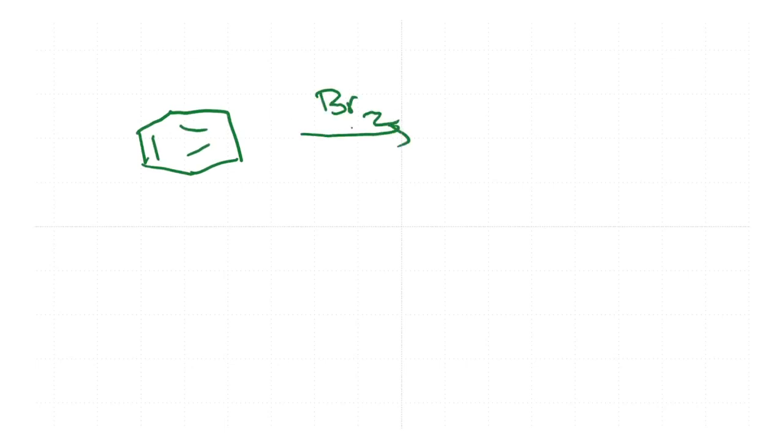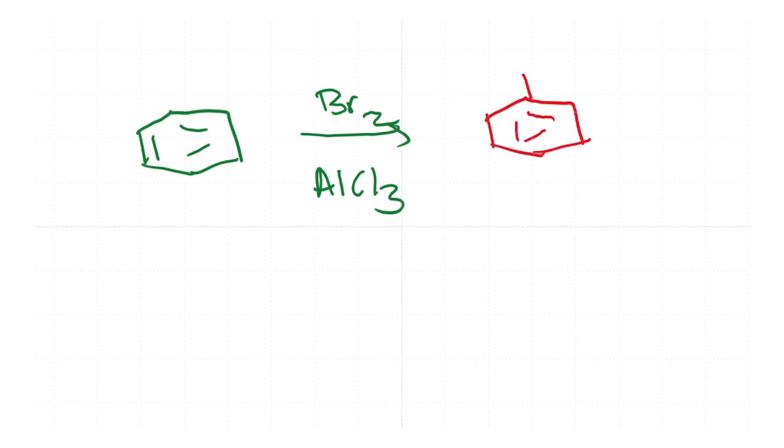You would have studied this as a very special property of aromatic compounds — 4n+2 pi electrons, etc. So, how do we get benzene to undergo bromination? If we want to do that, we need to take bromine and add a Lewis acid like aluminum chloride, AlCl3. This reaction goes fairly well and you get the product bromobenzene.